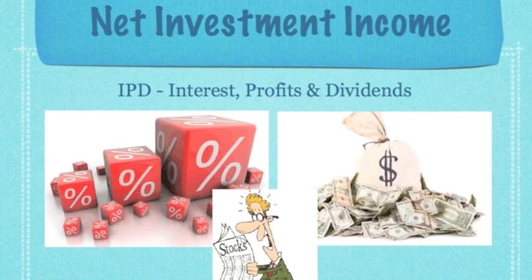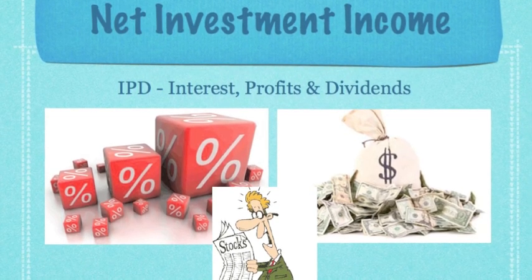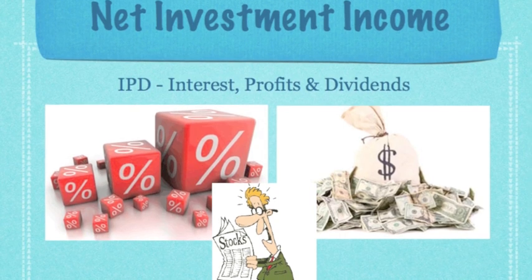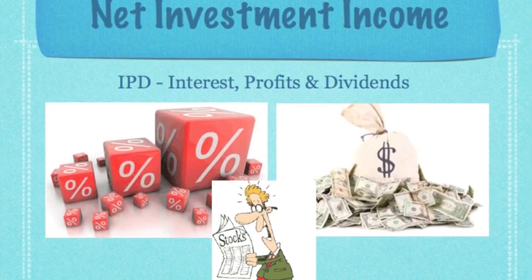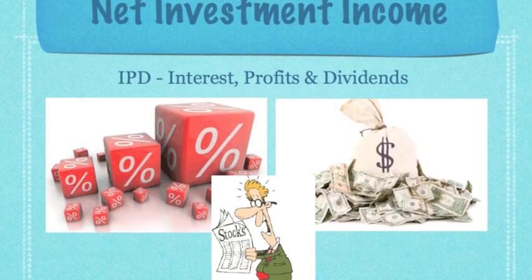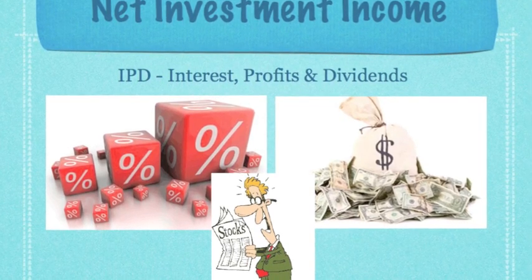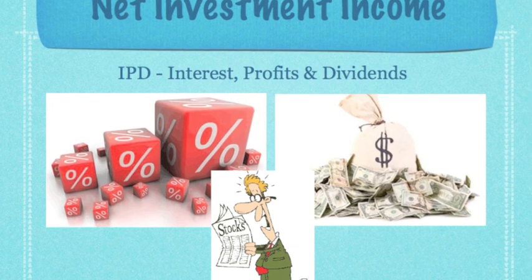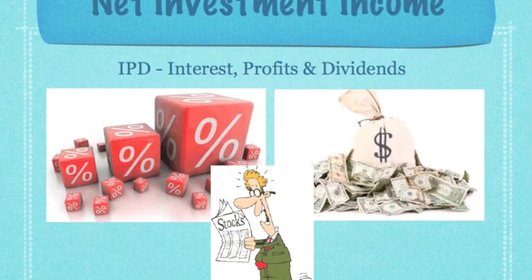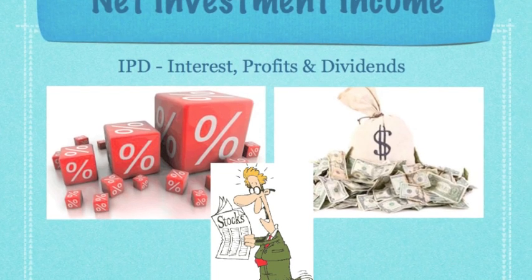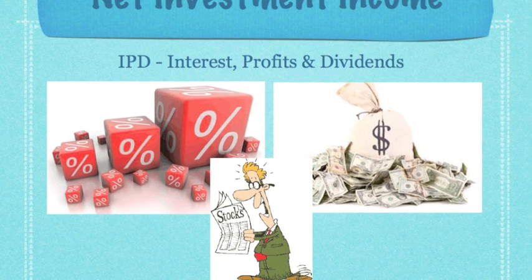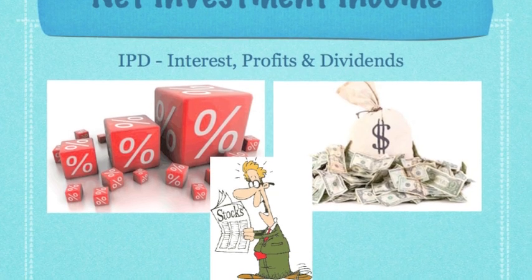The third component of the current account is net investment income. Essentially it is made up of IPD: interest, profits, and dividends. So if you earn interest, profits, and dividends from foreign assets such as foreign shares, then that is an export because you are bringing money into the country. And if foreign people earn interest, profit, or dividends from UK assets, then they essentially take away money, so that becomes an import.